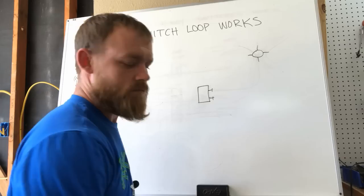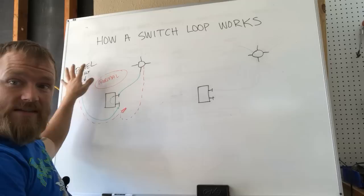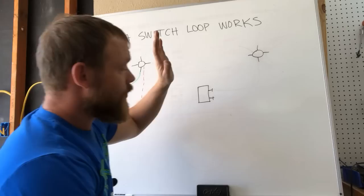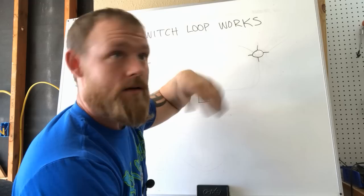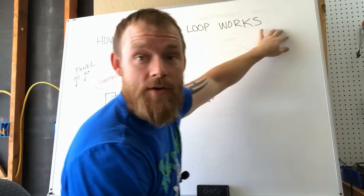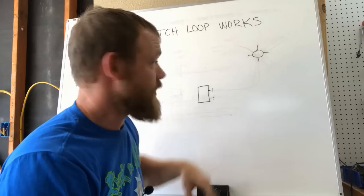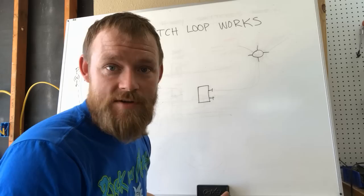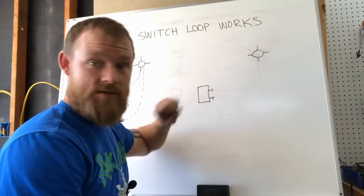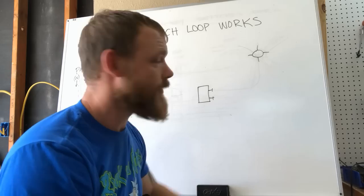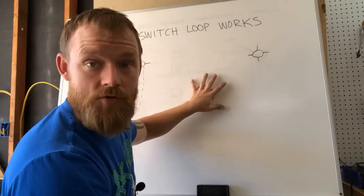All right, so the difference in a switch loop is that instead of bringing our incoming hot over to the switch first and then running our leg up and creating a loop that comes back to the panel, we're going to bring our hot into the light. And this light is going to be up in the ceiling or wherever. The whole idea is that you're sending a hot and a neutral into here and you're leaving that neutral up. You're not going to run a neutral down here because a switch doesn't need a neutral. A switch just needs a hot in and a hot out. You can think of a switch as basically one wire that goes from the panel all the way up to a light. And what you're doing is you're putting a switch in the middle of it to be able to turn that off and disconnect that wire and cut it in half, basically.